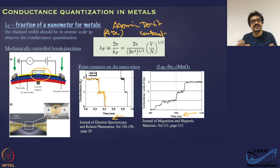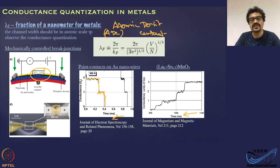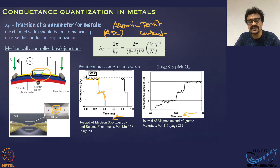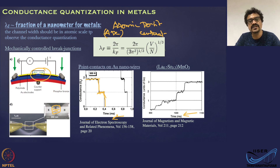These devices are called atomic point contacts (APC), and this quantization effect is universal in conductance. It does not care whether the conductor is a semiconductor or a metal — all that matters is the number of modes available for transport, with each mode contributing e²/h to the conductance.